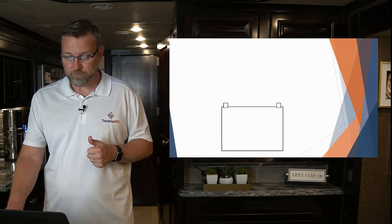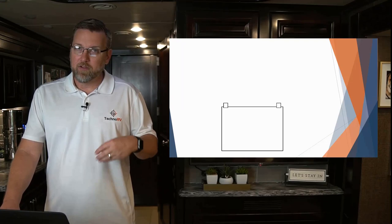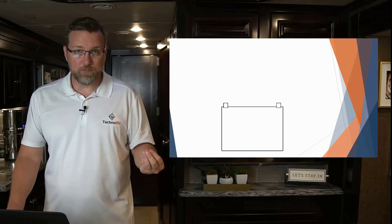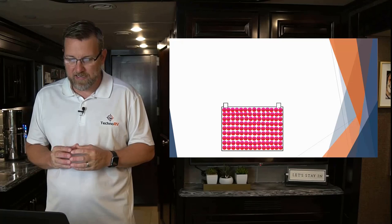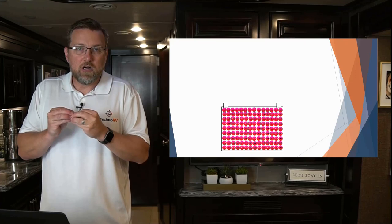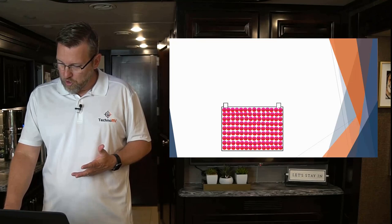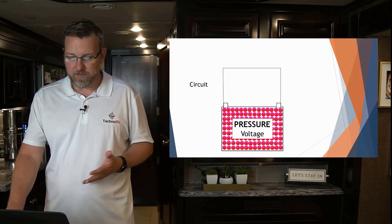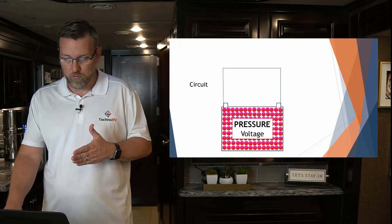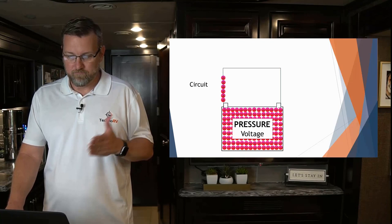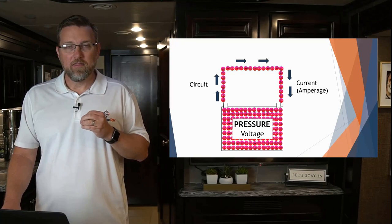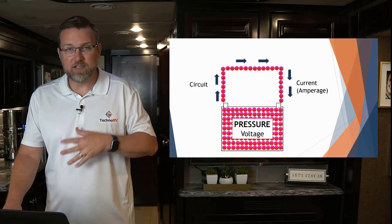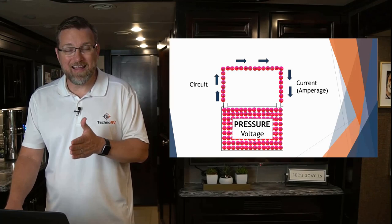Let's take a battery as an example. Creating electrons within a battery is a chemical reaction. Fill the battery up with negatively charged electrons — once that battery gets full, the electrons want to flow but have nowhere to go. All those electrons in there: that's the pressure, that's the voltage. If I give those electrons a circuit from one pole to another pole, they're immediately going to take that path. Now, that flow of the voltage across that circuit is measured in amps. Amps is the flow of those electrons across a circuit.